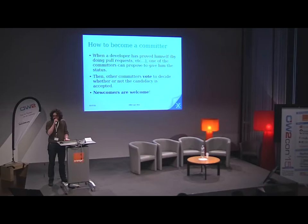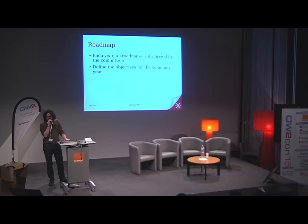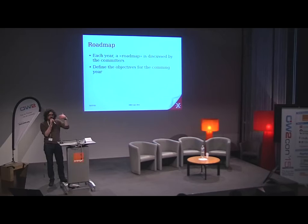How to become a committer? First, you prove yourself by doing pull requests. If we think you are good enough, one of the committers can propose giving you committer status, and we organize a vote. Newcomers are welcome — if you want to contribute to this great project, feel free. How we work: every year we create a roadmap, which is discussed by all committers and defines the objectives for the coming year. This brings visibility — all users know where we're going.